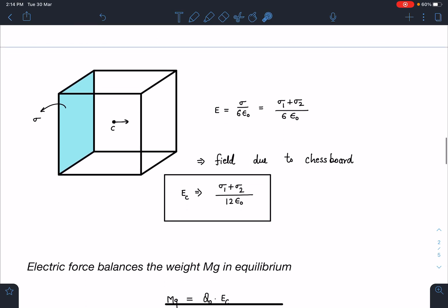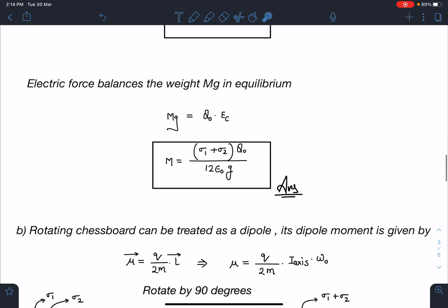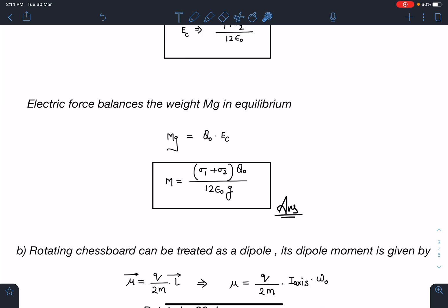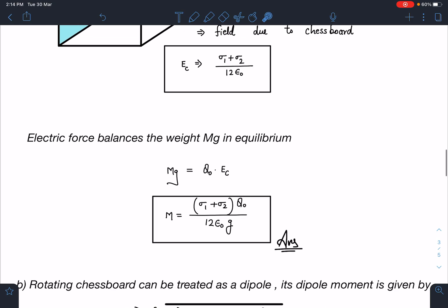Now here, electric force balances the weight Mg in equilibrium, so Mg equals Q₀Ec. The Ec value is known, so we can calculate M as (σ₁ + σ₂)Q₀/(12ε₀g). This is the answer for the first part. If this trick of superposition comes to mind, then this question becomes very easy. Otherwise, it's a challenging problem.